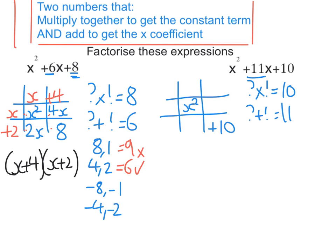So let's think about numbers that multiply to get 10. So I can have 10 and 1, I can have 5 and 2, and remember the negative ones, I can have negative 10 and negative 1, and I can have negative 5 and negative 2. Only one of these will add to get 11, so 10 add 1 is 11. So I've got the right one straight away.